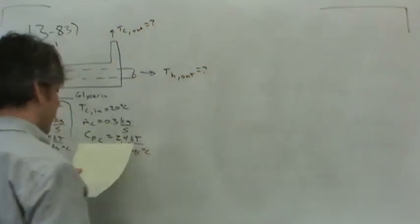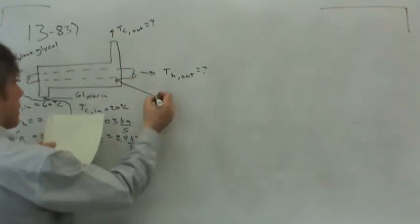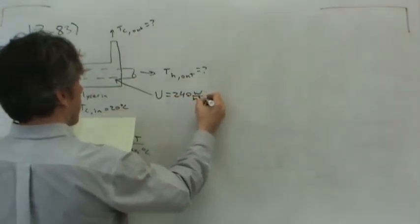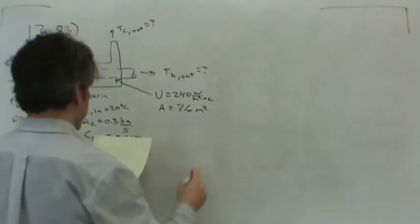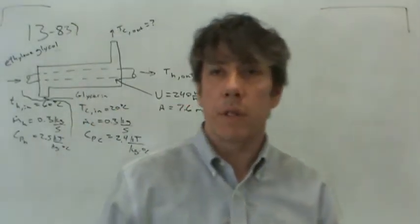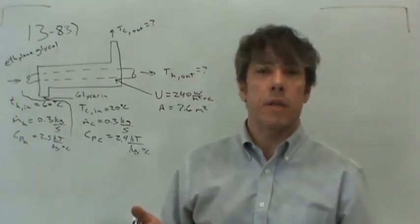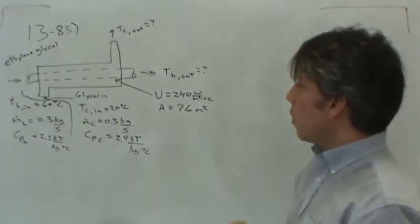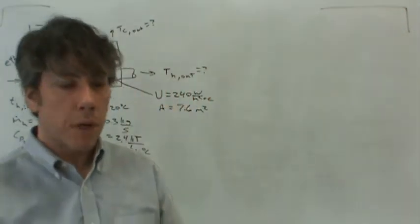The problem does not give us the exiting temperatures of either stream. They did tell us the properties of the heat exchanger — the overall heat transfer coefficient is 240 watts per square meter per degree Celsius and the heat transfer surface area is 7.6 square meters. We cannot use the log mean temperature difference method because we don't have the exiting temperatures and we don't know the overall heat transfer rate. So we have to use the effectiveness number of transfer units method — that's our only option.